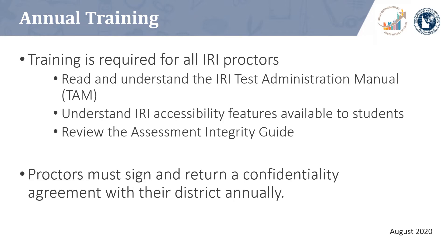A recorded IRI accessibility training is also available on the assessment webpage and outlines what features are available as universal tools, designated supports, and accommodations within the iStation system. After the completion of annual training, all proctors are required to sign a confidentiality agreement to be kept on file in the school or district for two years. Additional information related to test security can be found in the Assessment Integrity Guide available through the Assessment and Accountability Online Resource Center.